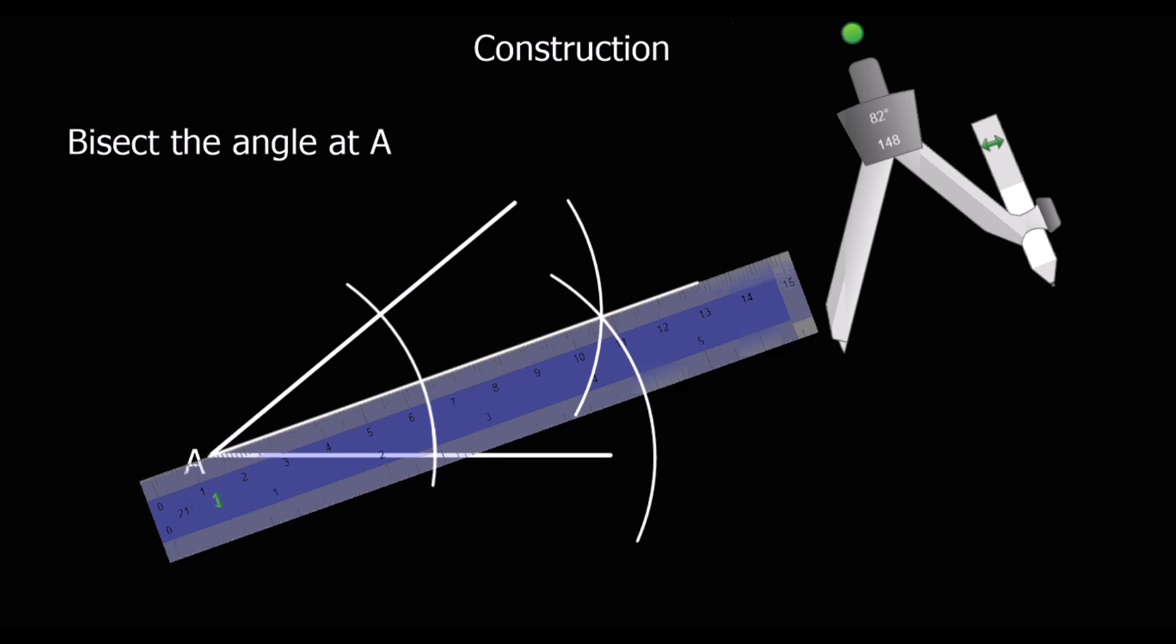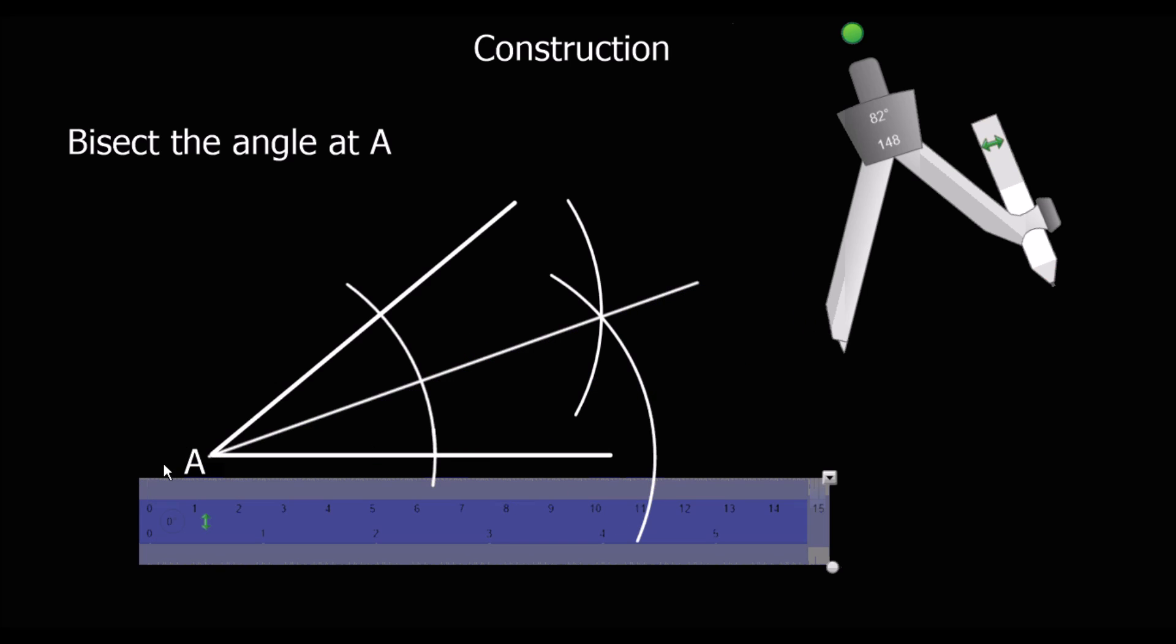If I move the ruler away, you'll be able to see we've got this line here which is bisected the angle at A. We've bisected it.